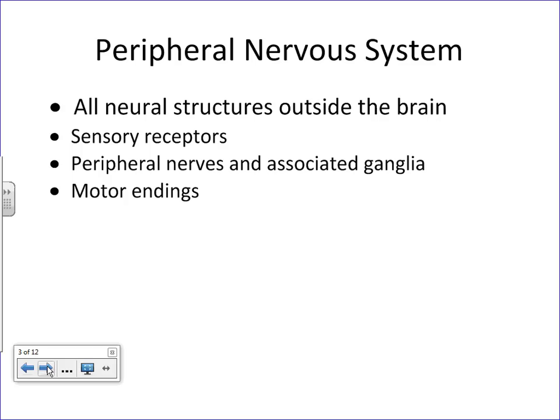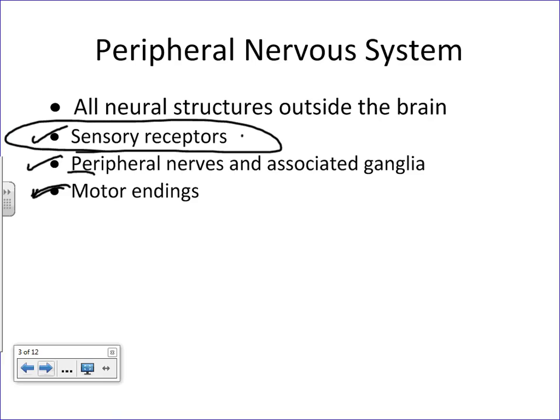The peripheral nervous system is essentially all of the neural structures outside of the brain. The major structures found outside the brain are sensory receptors, peripheral nerves and their associated ganglia, and motor endings. So essentially sensory receptors, sensory neurons, peripheral nerves going into or out of the spinal cord, and then motor endings synapsing with target tissues.